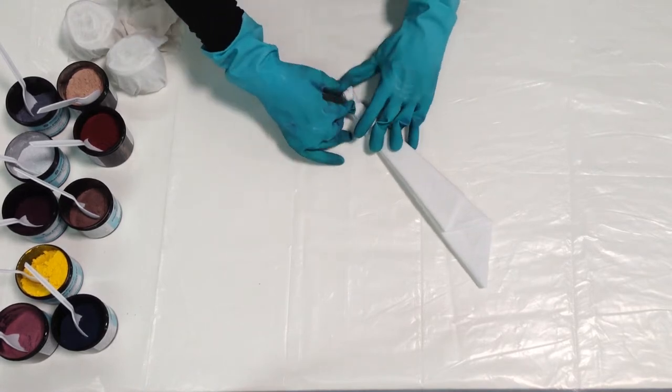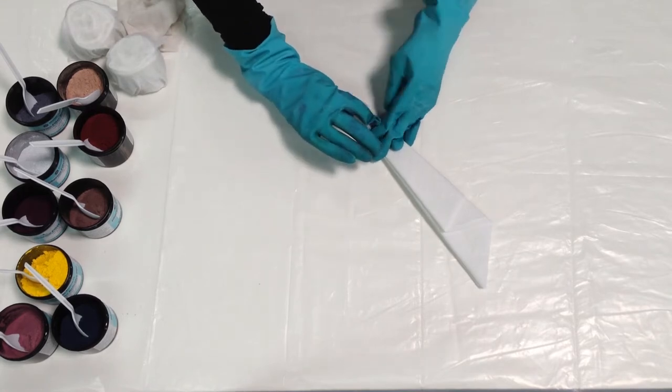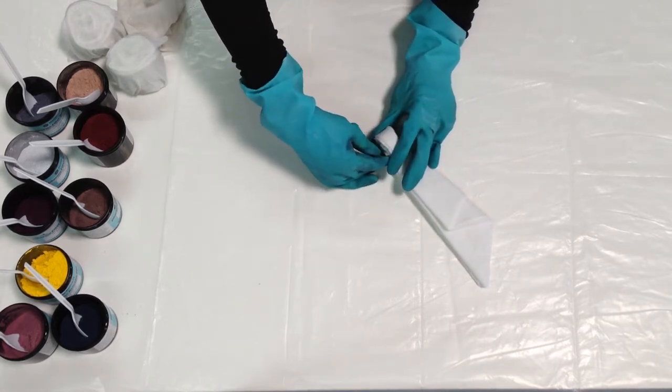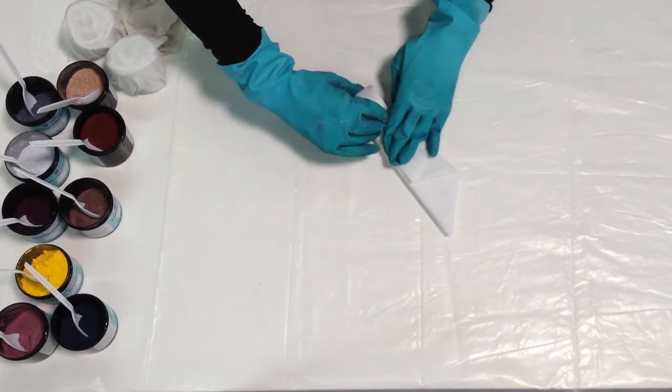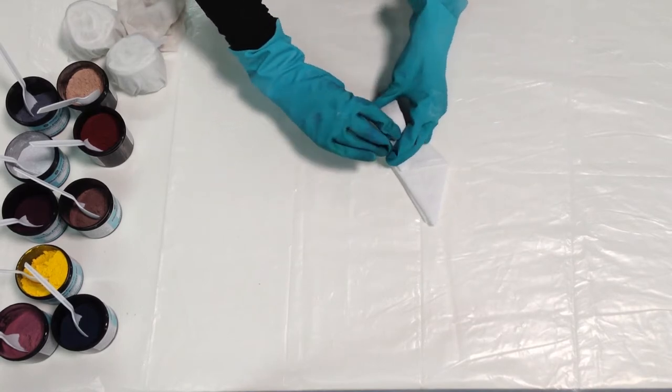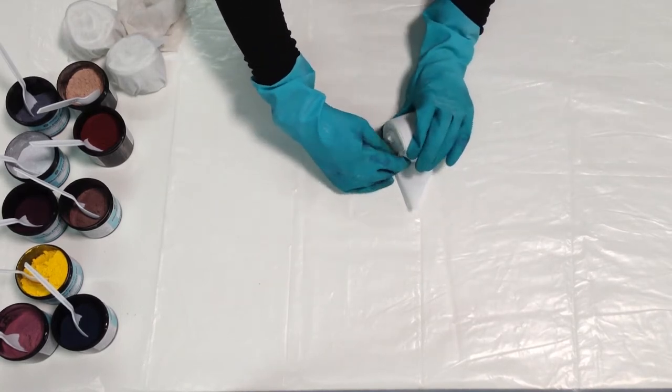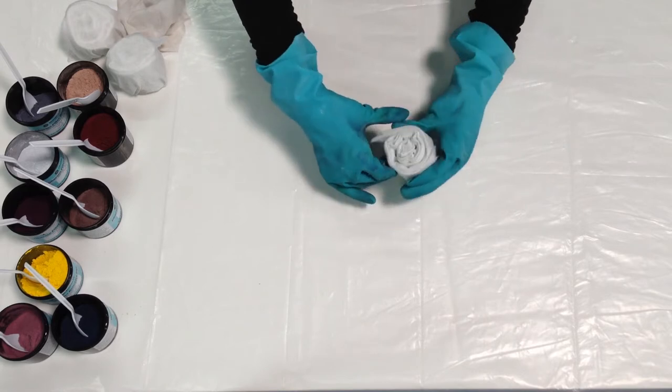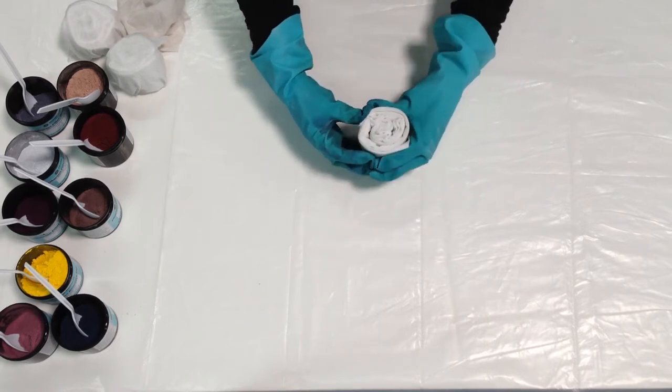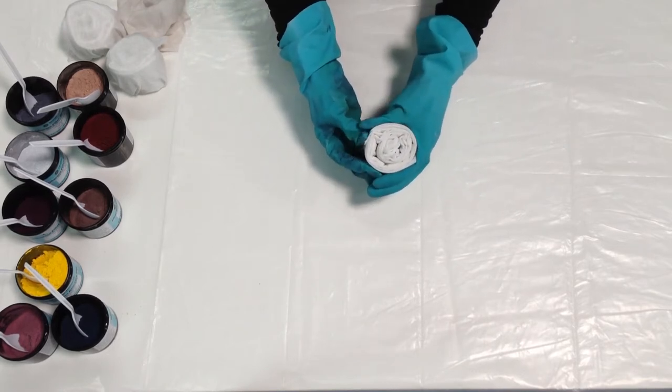But I'm going to roll it pretty loosely. If it's too tight, there won't be room for the dye to soak in. So I'm going to give it a little bit of room there, kind of a loose-ish cinnamon roll with the edges lined up.